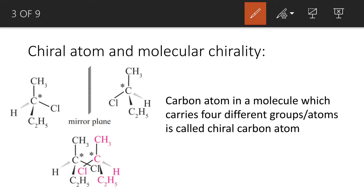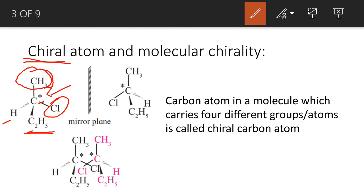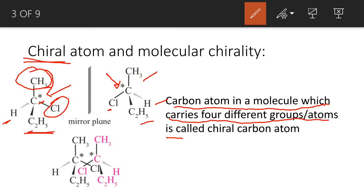So first, what are chiral carbon atoms? A chiral carbon atom — what does chiral mean? It is a carbon atom to which four different groups are attached. As you can see here, this carbon atom has CH3 attached on top, Cl attached here, C2H5 here, and H here. Similarly, in another example, the carbon atom has CH3, H, C2H5, and Cl. So a carbon atom with four different types of groups attached is called a chiral carbon atom. A carbon atom in the molecule which carries four different groups of atoms is called a chiral atom.